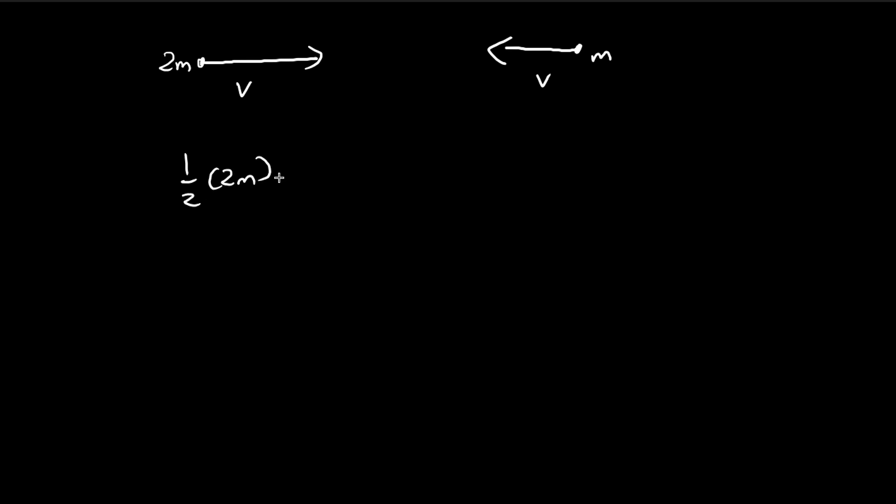So first of all, let's set up the equation for energy. So since the collision is elastic, we know that energy is conserved. And so in this question, we have two unknowns. So first is the final velocity of this mass, I'll call that v1, and then the final velocity of this second mass, v2.